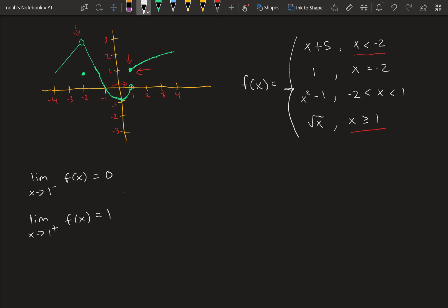we see y is equal to 1. So these two are not equal. So we would say the limit as x approaches 1 of f of x equal to does not exist.